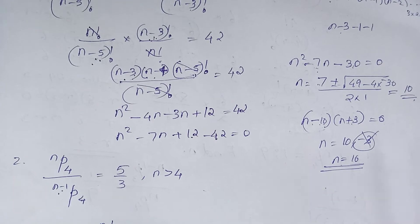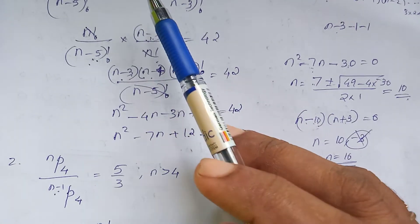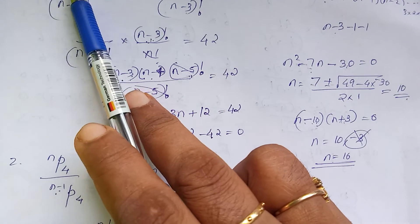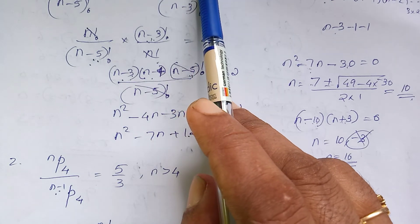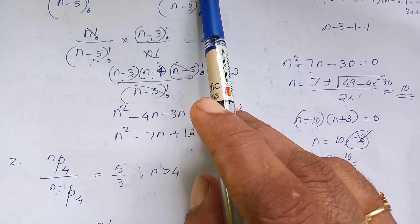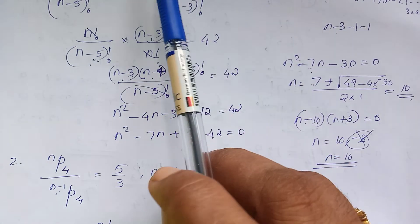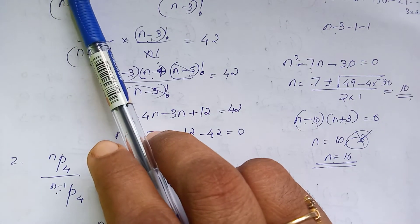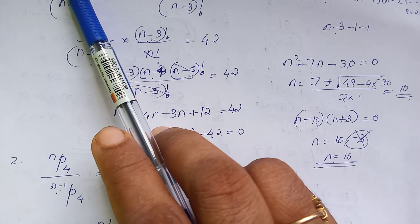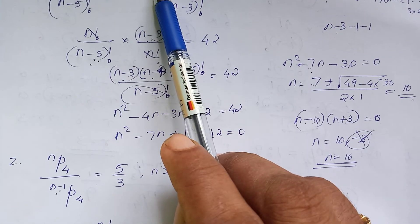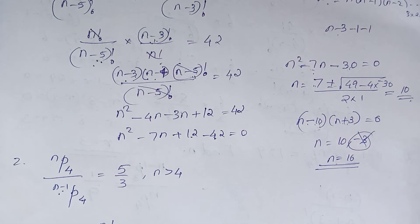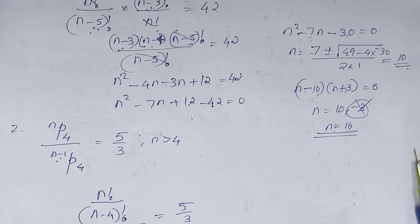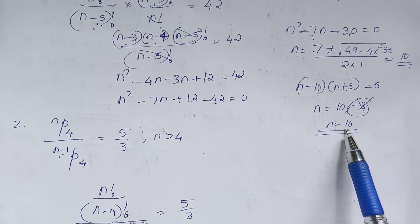N equals 2. nP5 equals 42 into nP3, where n is greater than 4. Testing: 5 is equal to 5, 42 is equal to 5. That's correct. You can do this — it is correct.